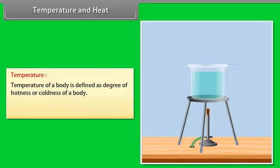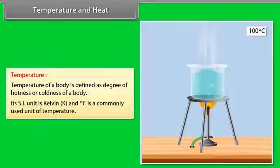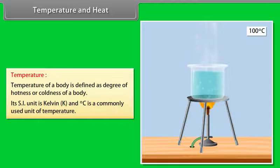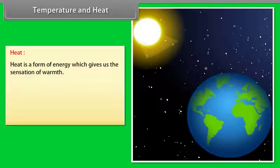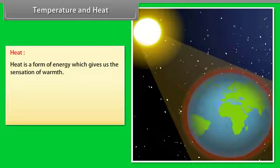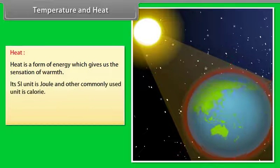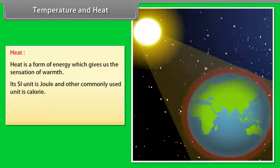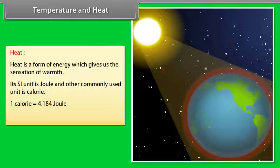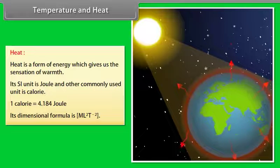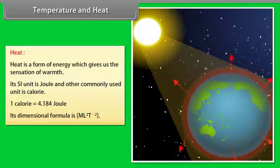Temperature of a body is defined as the degree of hotness or coldness of a body. Its SI unit is Kelvin, and degree Celsius is a commonly used unit. Heat is a form of energy which gives us the sensation of warmth. Its SI unit is Joule; another commonly used unit is calorie, where one calorie equals 4.184 Joule. Its dimensional formula is ML²T⁻².